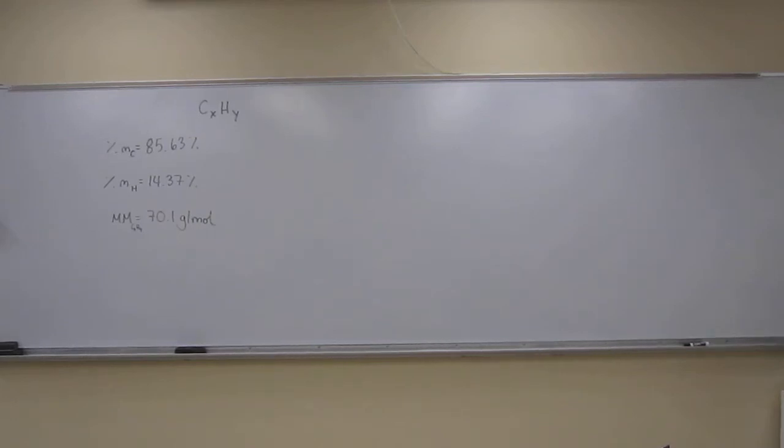Okay, so this one says, a substance CXHY has the composition by mass 85.63% carbon and 14.37% hydrogen. First, it wants you to calculate the empirical formula of the substance, and then it asks, what is the molecular formula of the substance if its molar mass is 70.1 grams per mole?